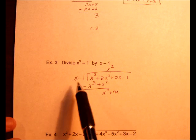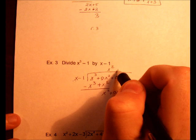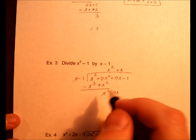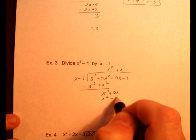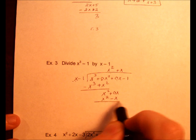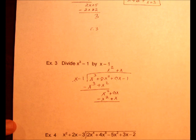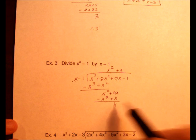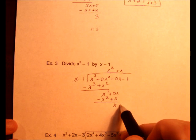So x times what is x²? Positive x. Multiply the x times both, you get x² - x. Let's go ahead and subtract. So when I subtract, I change my signs. 0 and 0 plus 1 gives you 1x. Drop down that -1.